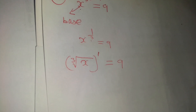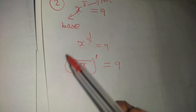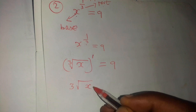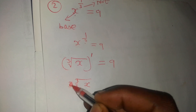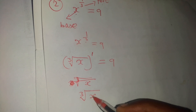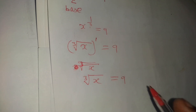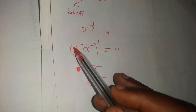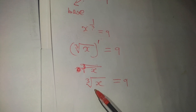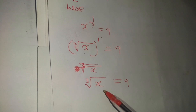Now, when we use the laws of indices, anything raised to the power of 1 is the number itself. So we end up getting the cube root of x to the power 1, which simplifies to just the cube root of x, equals 9. Since anything raised to the power of 1 is the number itself. So we end up with: cube root of x equals 9.